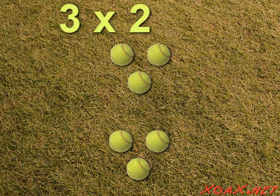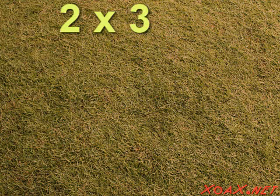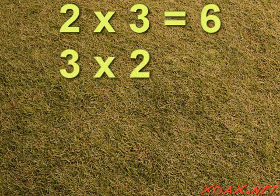Counting out all of the tennis balls that we have again, we get 1, 2, 3, 4, 5, 6 tennis balls. So 3 times 2 is 6 also. We just saw that 2 times 3 is 6, and 3 times 2 is also 6.